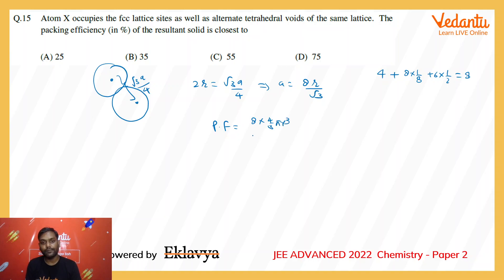...the volume of one atom, divided by a cubed. Replacing a with 8r by root 3, the whole cube, this on simplifying gives root 3 pi upon 16, which is 0.34. So in percentage it would be 34%.